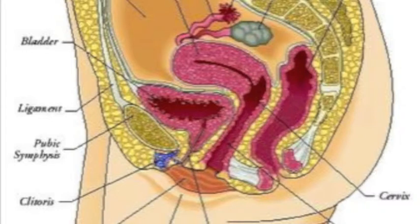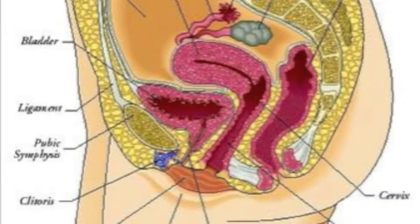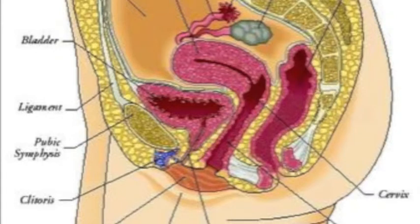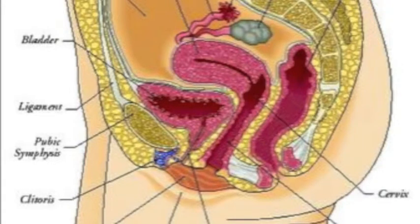Looking at this diagram, we can identify the rectum, the large intestine, the sigmoid colon, and the anus. The vaginal opening leads into the vagina structure. The urethra opening is also visible. So we have urethra, vagina, and anus. The bladder sits between the rectum and bladder, with the vagina in between. The vagina goes up to this large muscular organ — the uterus.